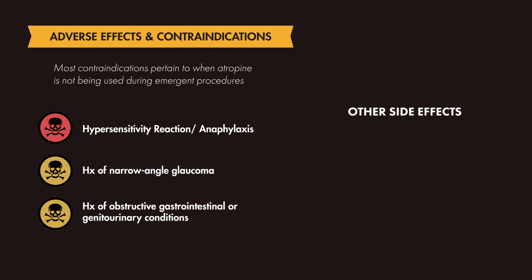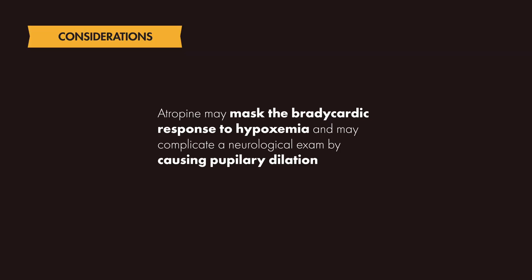Common side effects of atropine include tachyarrhythmias, nausea, visual changes, and hallucinations. Keep in mind that atropine's effect on heart rate may persist for several hours and may prevent the bradycardic response to hypoxemia, so these patients should be closely monitored for hypoxia with pulse oximetry. Additionally, atropine dilates the pupils, although it does not eliminate pupillary constriction in response to light, which may complicate the evaluation of neurologic status once the patient is paralyzed.